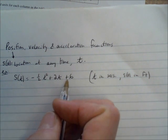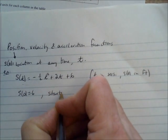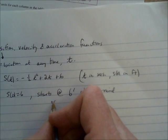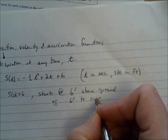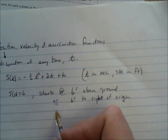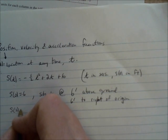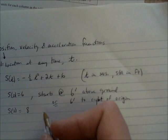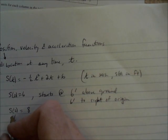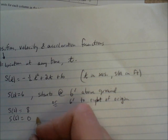This means that the object starts at 6 feet because s of 0 is equal to 6 — it's either 6 feet above ground or 6 feet to the right of the origin. If you want to find out where the object is after 2 seconds, you do s of 2, which equals 8. And s of 6 equals 0, meaning the object either hits the ground or returns to the origin.